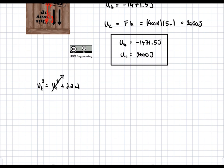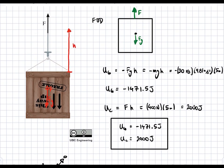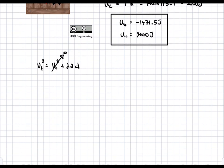To find the acceleration, we can simply do a force balance. We know that F is going to be bigger than Fg, so we assume there's an acceleration in the positive Y direction. This is a 1D problem in the Y direction. We do a sum of forces in the Y direction and equate it to M times A. So F minus Fg equals M times A.